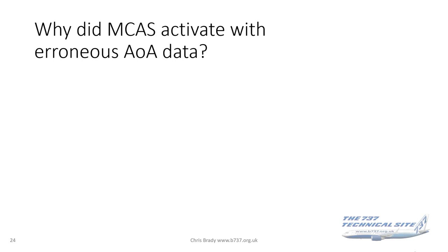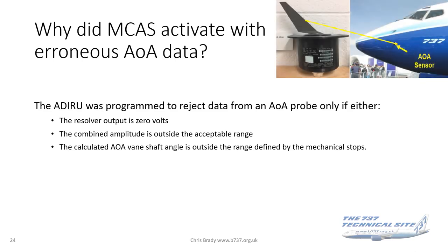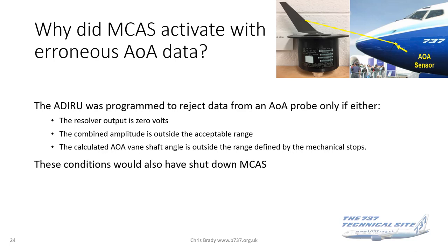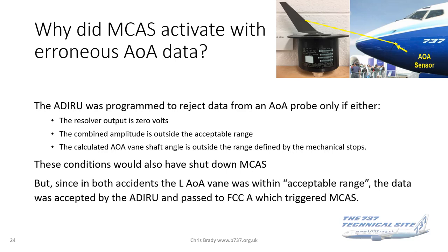Why did MCAS activate with erroneous angle of attack data? The ADIRUs were programmed to reject data from an alpha probe only under the following conditions: if the resolver output was zero volts (a complete electrical failure of the alpha probe), or the combined altitude was outside the acceptable range, or the calculated angle of attack vane shaft angle was outside the range defined by the mechanical stops. Any of these conditions would also have shut down MCAS. Unfortunately, in both accidents the alpha vane was still within the acceptable range, so the data was accepted by the ADIRU and passed to the flight control computer, which triggered MCAS.